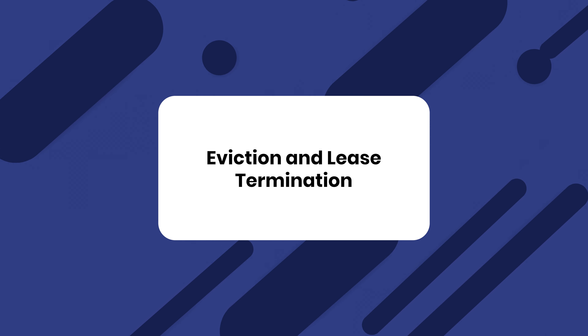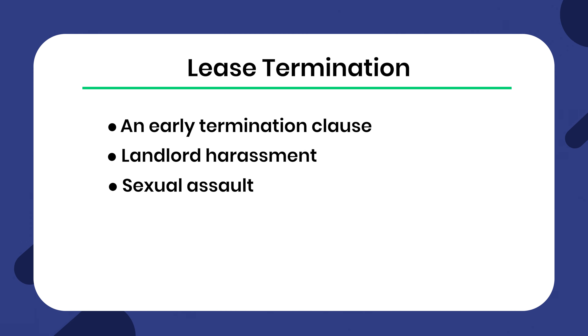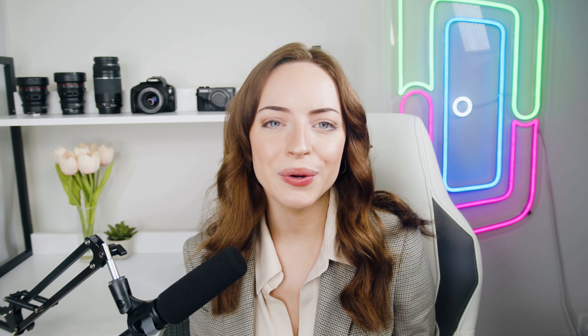Eviction and lease termination. A tenant has the right to terminate the lease early for several reasons, such as an early termination clause, landlord harassment, sexual assault, uninhabitable conditions, etc. However, the tenant can also wait until the lease ends to terminate it. In the case of a monthly lease, the tenant needs to provide written notice within 30 days of the end date. While the legal recommendation is 30 days, this amount can be modified. Alternatively, a landlord may evict their tenant before the lease ends, known in Texas laws as eviction, forcible entry and detainer, and forcible detainer suits.